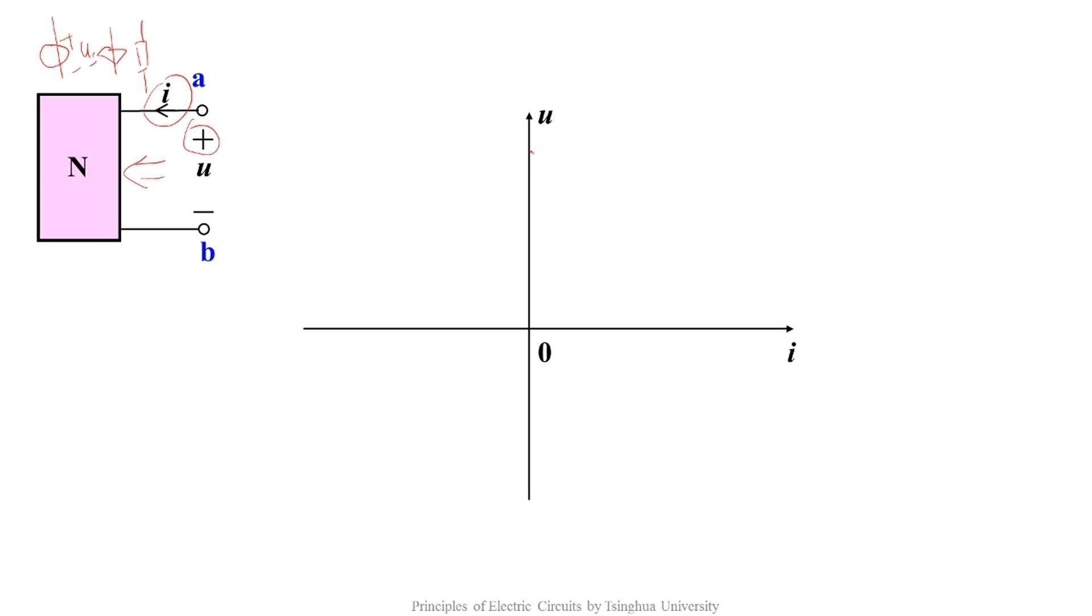What does this mean? The current is always zero, and the voltage can be any value, so it's an open circuit. Or a resistor with infinite value, or a current source with zero value.